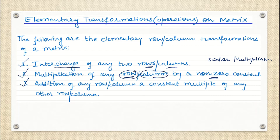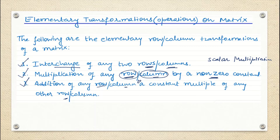The third method is addition of any row or addition of any column to a constant multiple of any other column. We are going to see what these things mean to us.